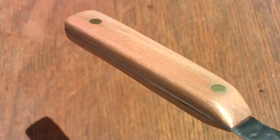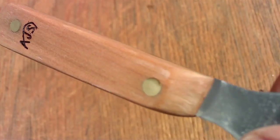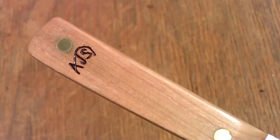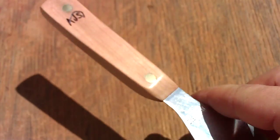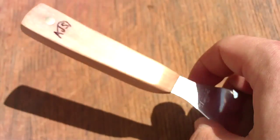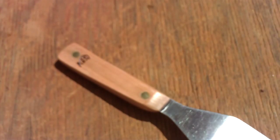Alright, so I've got the handle all buffed now. It's all shiny. And now it's ready for coating with oil. So because this is a spatula and it's going to be around food, I don't want to use something like linseed oil, which is toxic. At least the boiled linseed oil is. So I'm going to be using just olive oil.